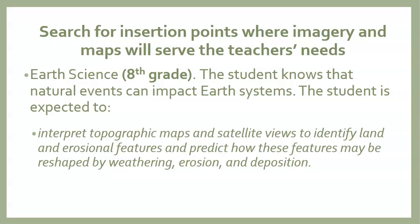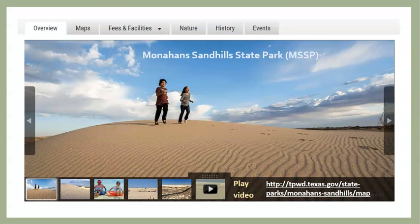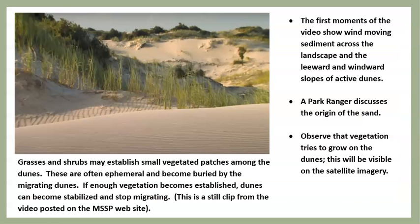Similar standards appear in the high school earth and space science course. Our geoheritage site for wind erosion and deposition is Monaghan Sandhills State Park. The park is an excellent environment to demonstrate how the wind reshapes earth's features. The website's home page has a short video that provides a virtual field visit, moving students through the environment with a park ranger guide while showing active erosion and deposition by the wind.